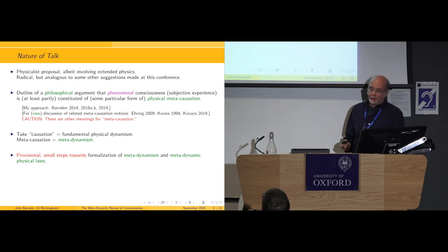So I'm going to give an outline of a philosophical argument that phenomenal consciousness is at least partly constituted of something that I call meta-causation, which is a very unusual concept which does crop up in the philosophical literature but not very much. And as far as I know, it hasn't been connected to consciousness. But I should caution you that people use the word meta-causation in a variety of different ways, including for things like downward causation, and I do not mean those things. We'll see in a minute what I do mean.